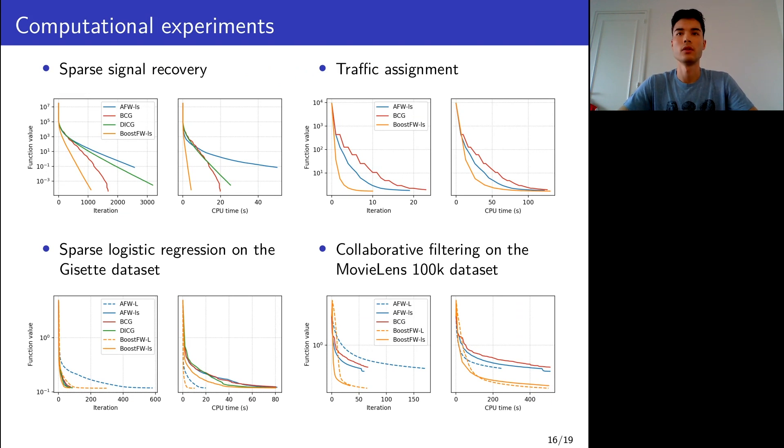Here are the results. In orange, we have the Boosted Frank-Wolfe algorithm, and we can see that it consistently outperforms the other algorithms, both in number of iterations and CPU time. It's very important also to insist that this is much faster in CPU time, showing that the procedure is not too expensive, that there is no hidden cost, and simply because the progress obtained overcomes this extra cost and leads to significant gains in performance. This algorithm can really be used in practice.